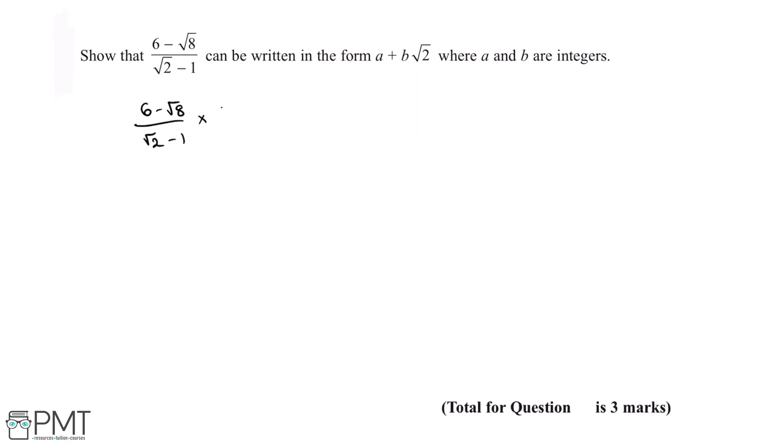So we're going to multiply it by (√2 + 1)/(√2 + 1). By multiplying the fraction by (√2 + 1)/(√2 + 1), this is the equivalent of multiplying the fraction by 1.